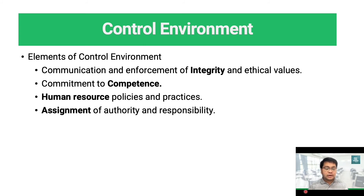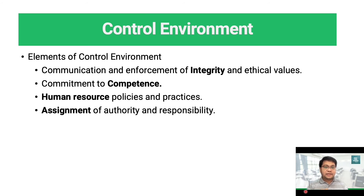Next, assignment of authority and responsibility pertains to how an organization assigns authority and responsibility for operating activities. What we can check includes policies and procedures relating to appropriate business practices, the knowledge, experience, and resources necessary to carry out duties of different personnel, and how the client communicates objectives, expectations, and accountabilities to employees. The relevant department to evaluate here is the human resource department.